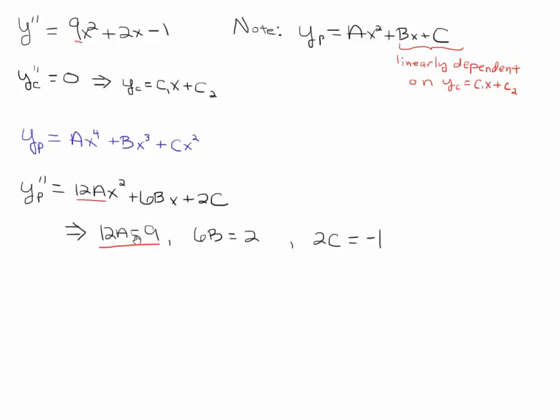So the first thing we do is we match up 12a with the 9, the second degree terms, and we get 12a equals 9. We match up the 6b with the 2, so we're matching up the linear terms, and we get 6b equals 2. And then finally we match up 2c and minus 1, so we get 2c equals minus 1. And then we just solve.